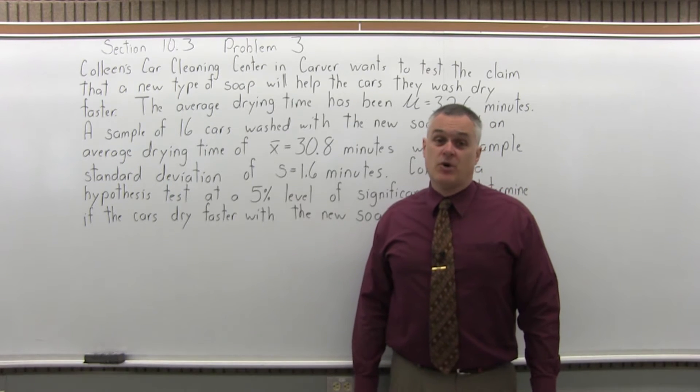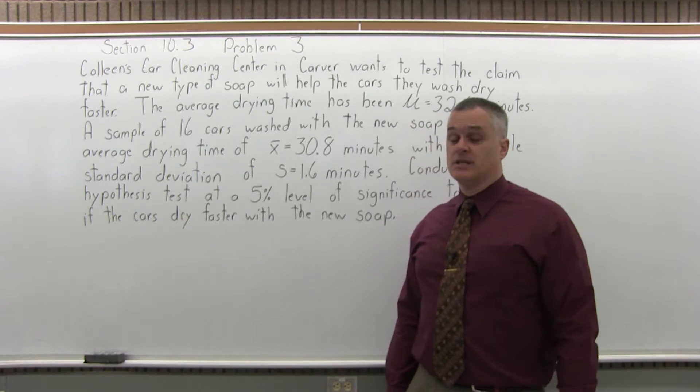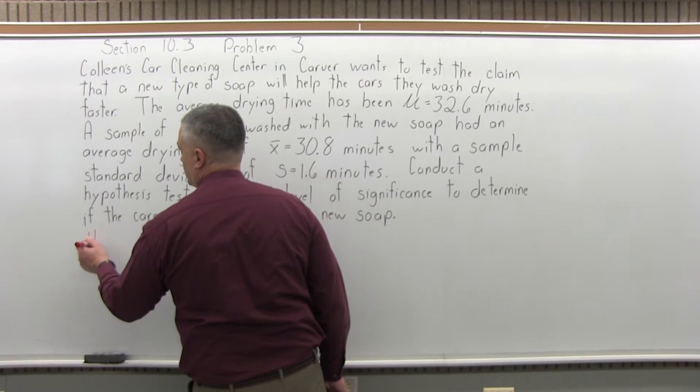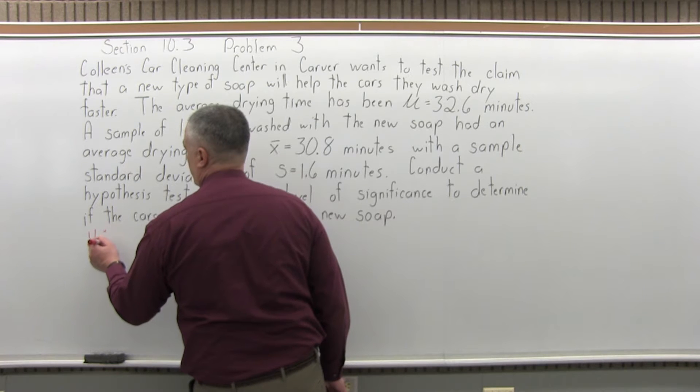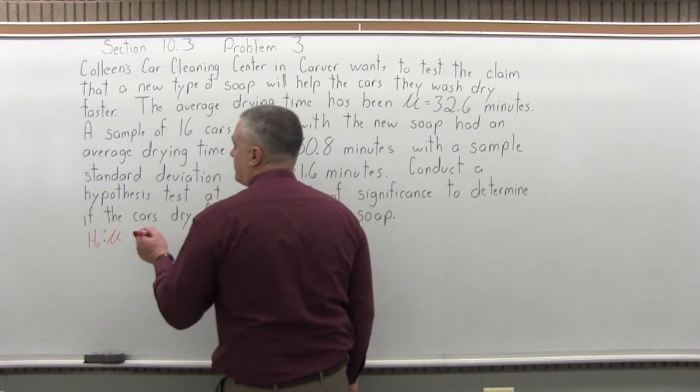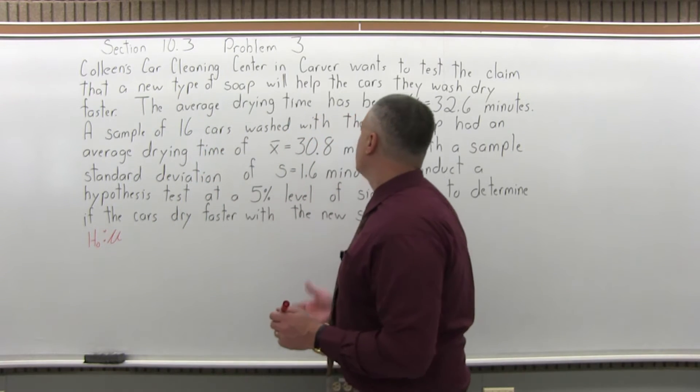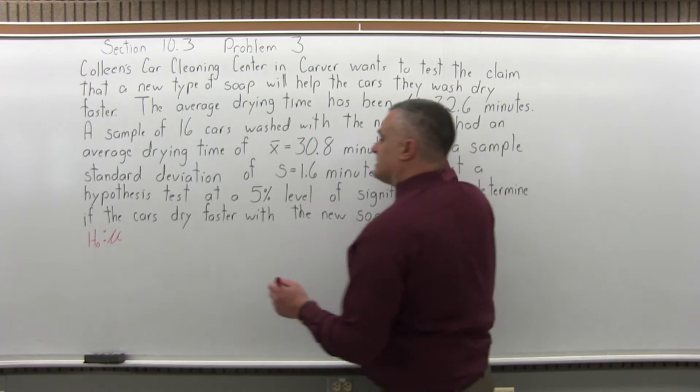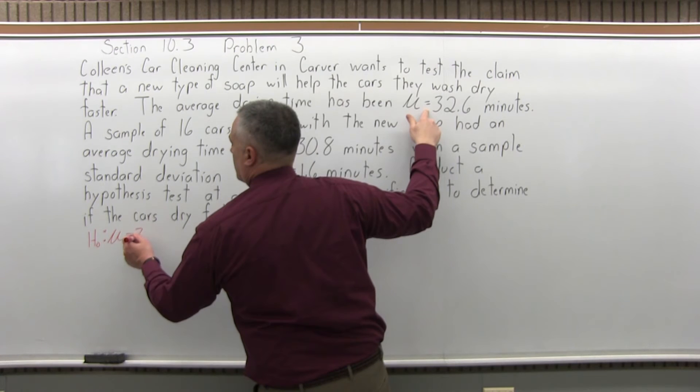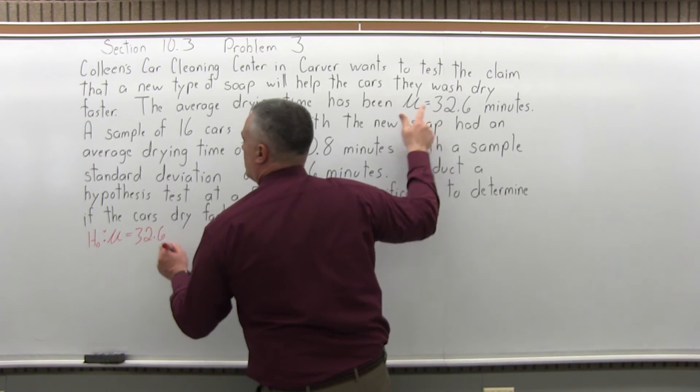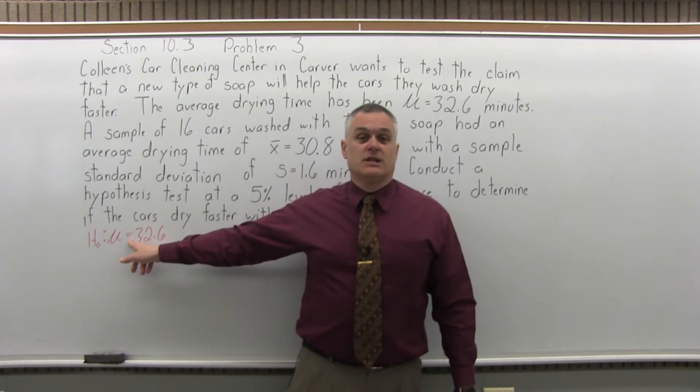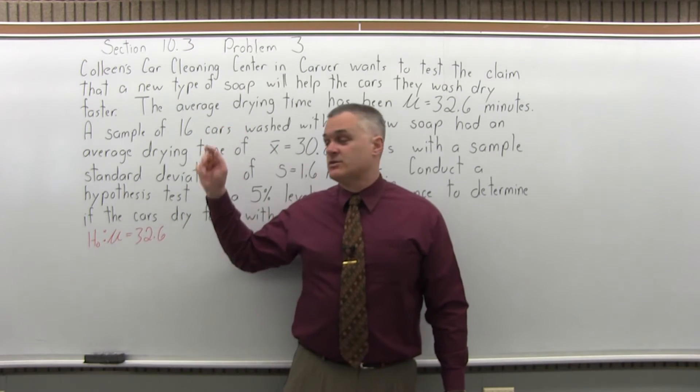So this is a hypothesis test, this is a six step process. The first step is state the null hypothesis. So we will have H sub 0, put a colon, mu, you'll have some condition of equality. Now in this case we can go right ahead and put mu equals 32.6. Your null hypothesis will either have an equal to, a greater than or equal to, or a less than or equal to, depending on how the question is worded. It will always have some condition of equality.